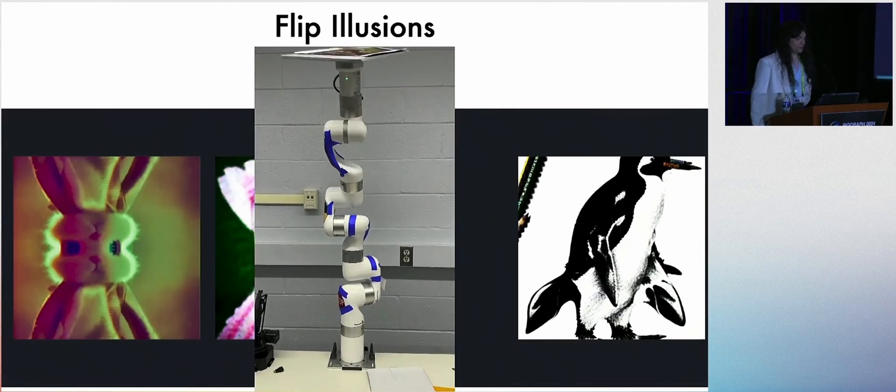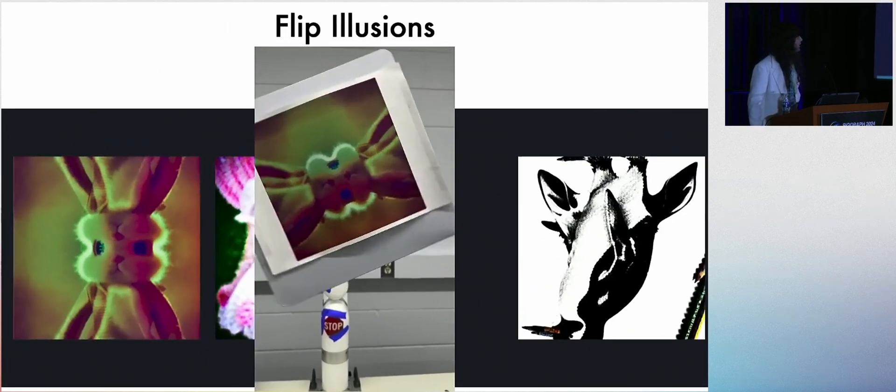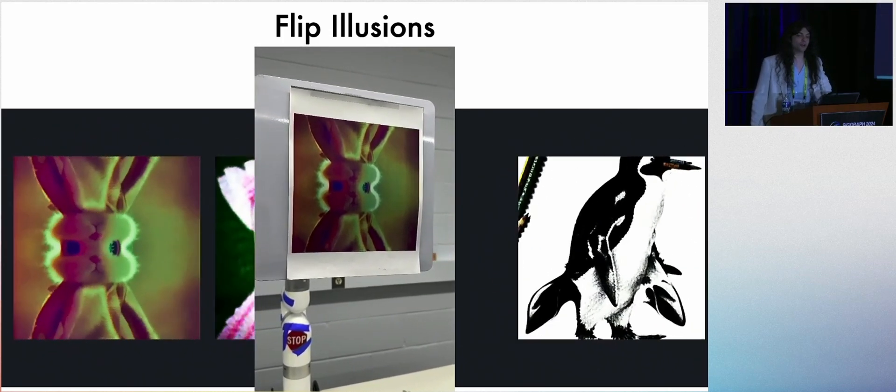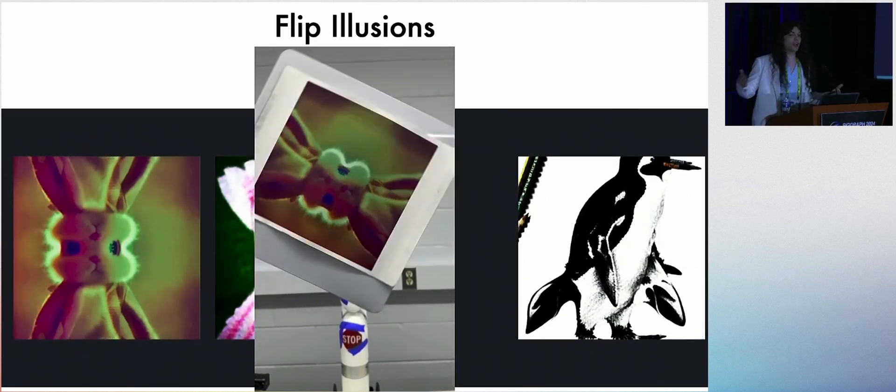So we have a few different types. We have Flip Illusions, which is the type that you saw earlier, where a picture will turn upside down, and it will either stay as the same type of picture or turn into an entirely different prompt.